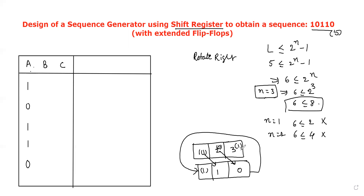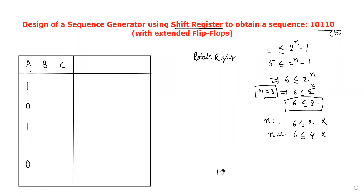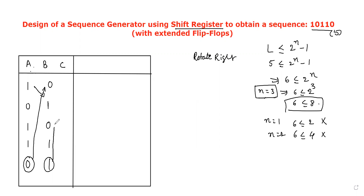Based on this rotate-right-shifting operation using the shift register, I will write the B sequence: one moves to this place, then zero, one, one. Now this zero will be placed at the B starting value. The same procedure continues for C also — the B zero-one bit will be placed to the starting position of C. Once these three flip-flops are filled, check whether the states are unique or not.